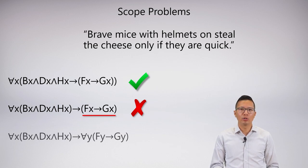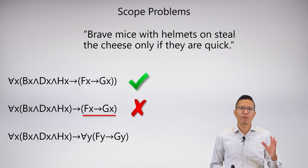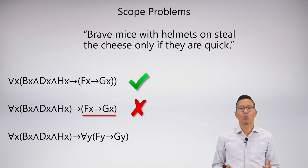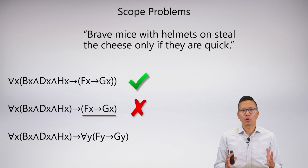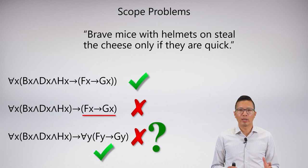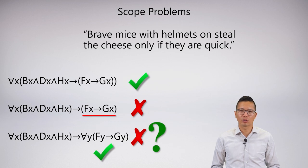Here's another example where we do have a proper sentence with no free variables — everything is bound. But this is also a very common scope problem. The first universal quantifies over the antecedent, then I fixed the scope problem by adding 'for all Y' into FY → GY. But why is this wrong? Even though it's a perfectly well-written sentence with no free variables, somehow it doesn't capture the meaning of 'brave mice with helmets on steal the cheese only if they are quick.'